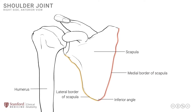These two borders diverge superiorly and have some very important bony prominences. The first of these is known as the coracoid process, labeled here. The coracoid process is a projection of bone projecting laterally as well as anteriorly, and it is shaped like the beak of a bird — hence the name coracoid.